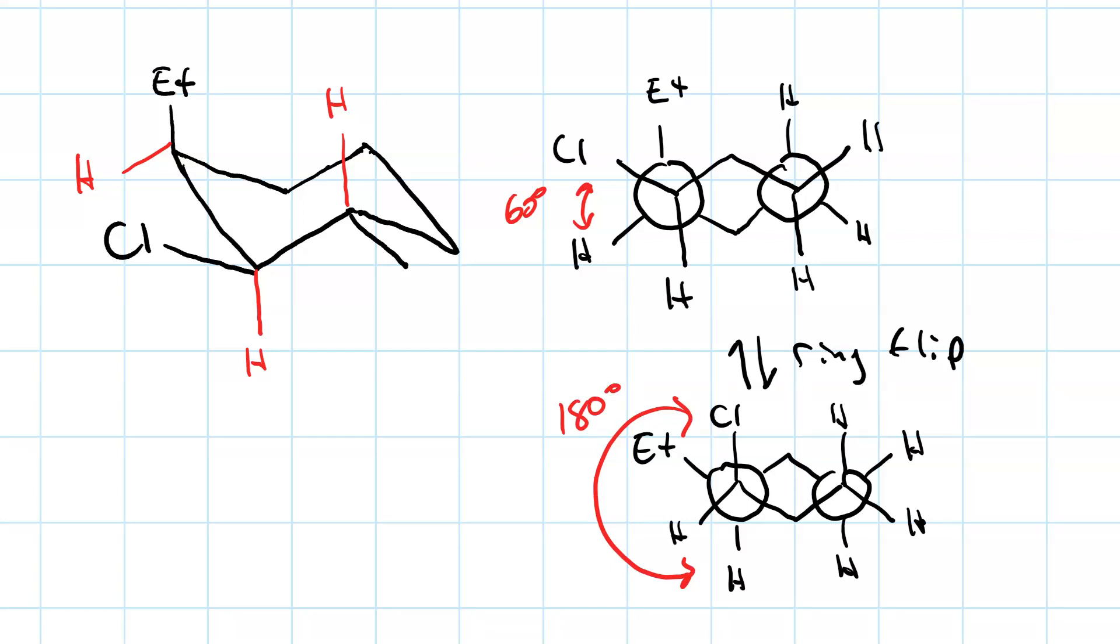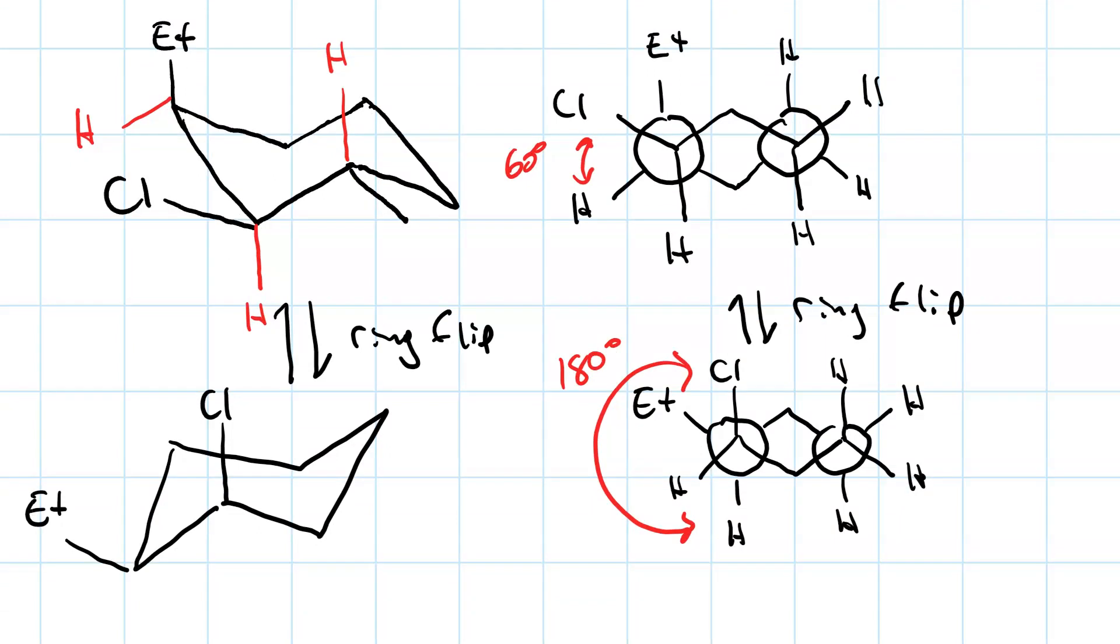So that's a ring flip in a Newman projection. Let's do one in the stick structure. First thing I'll do is draw the opposite chair. Now, here's my chlorine. And my ethyl group is here pointing up. So now my beta proton is here pointing down. Oh, and my methyl group is down over here.